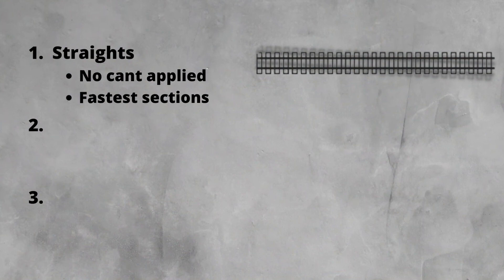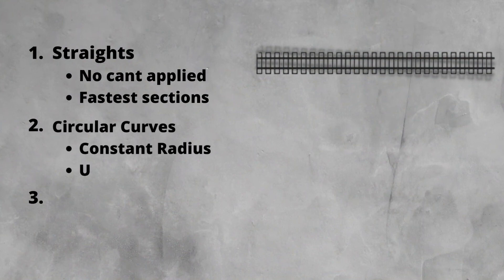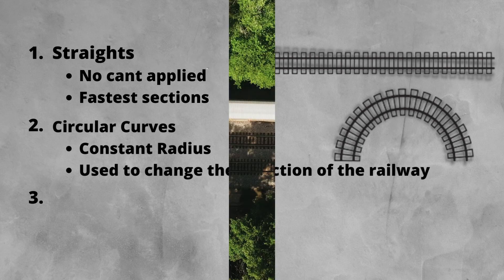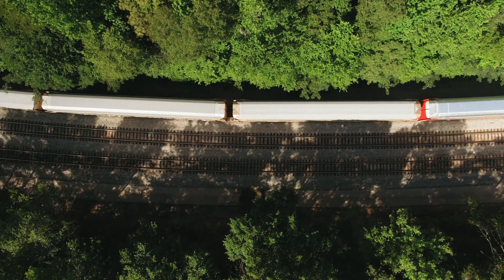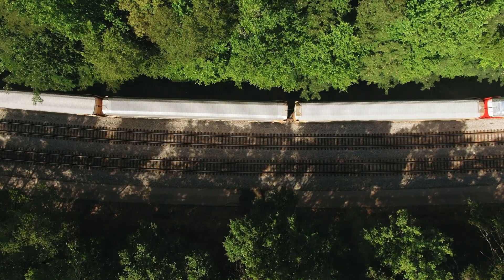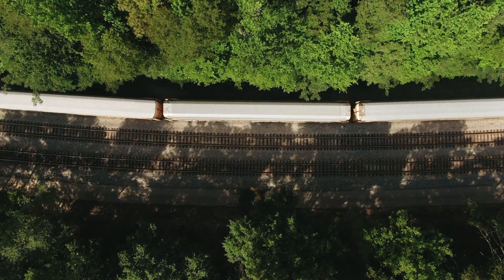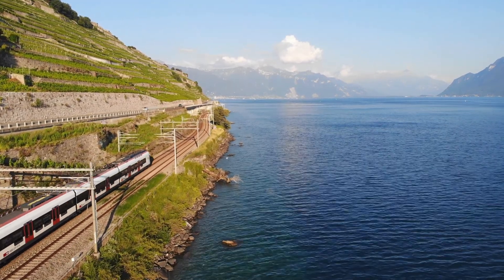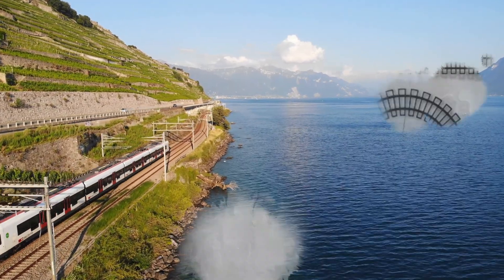Next up is circular curves. These curves have a constant radius along the length of their arc. Curves are used to change the direction of the railway. They can vary from tight radius, short curves in built-up suburban areas, to long, larger radius curves on high-speed lines.